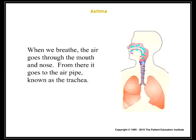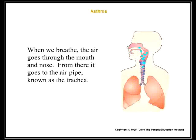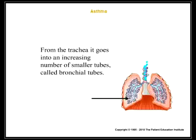When we breathe, the air goes through the mouth and nose. From there, it goes to the air pipe, known as the trachea. From the trachea, it goes into an increasing number of smaller tubes called bronchial tubes.